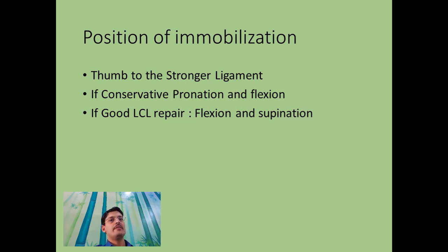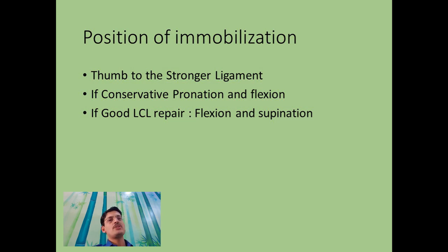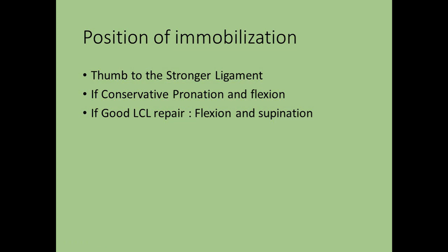To summarize: the LCL is a weaker ligament than the MCL. In a dislocation, the sequence of injuries is: lateral ligamentous complex, radial head fractures, anterior capsule, coronoid, and only very occasionally the MCL or ulnar collateral ligament.